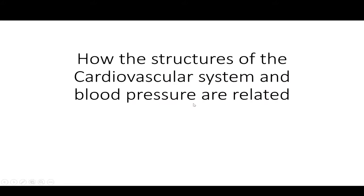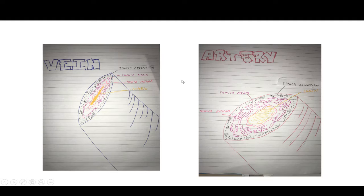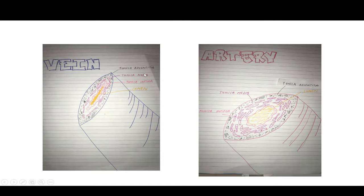This is how the structures of the cardiovascular system are related to blood pressure. Here we have the vein and the artery, and each is made up of three layers: the tunica adventitia, the tunica media, and the tunica intima, with the lumen in the middle.